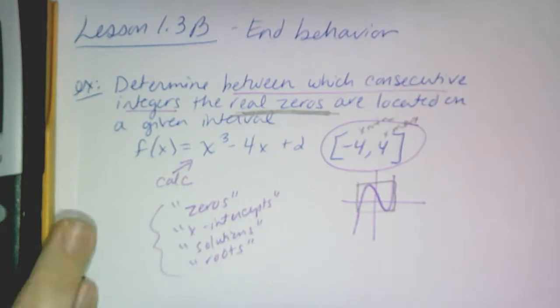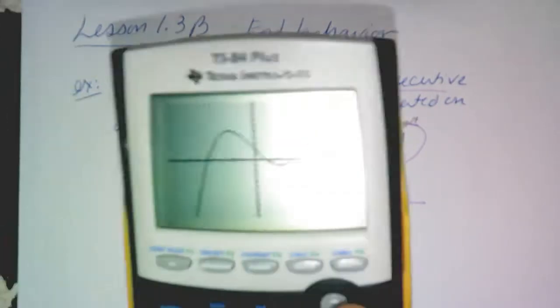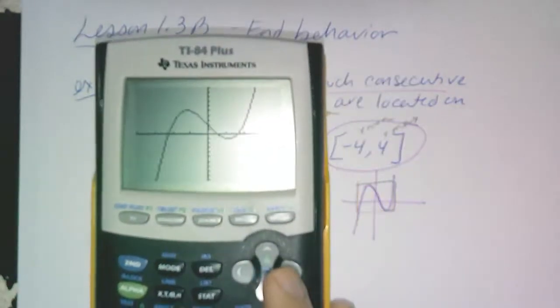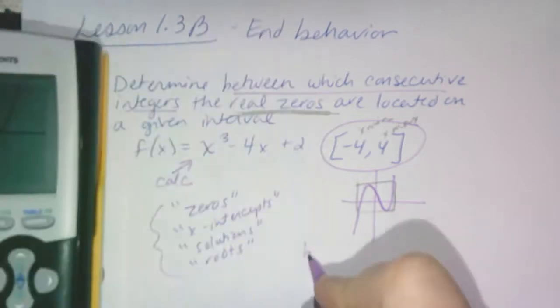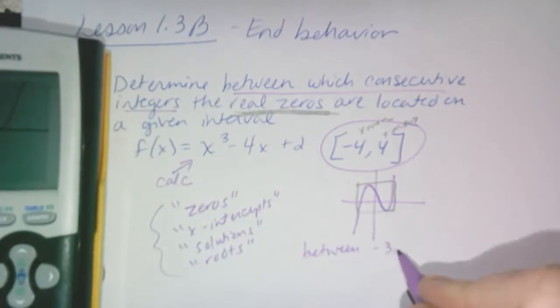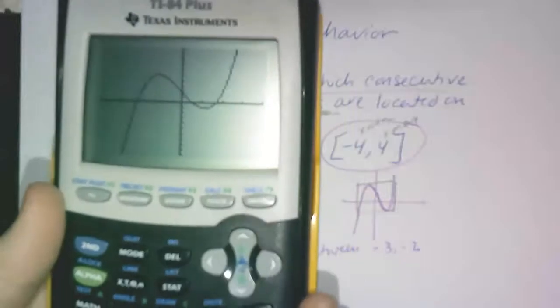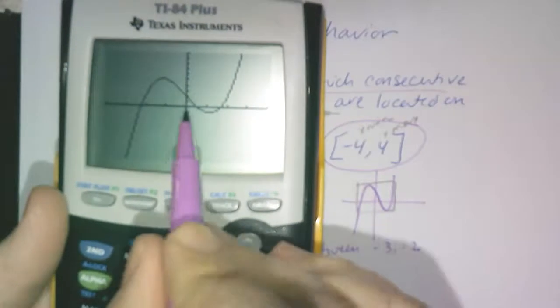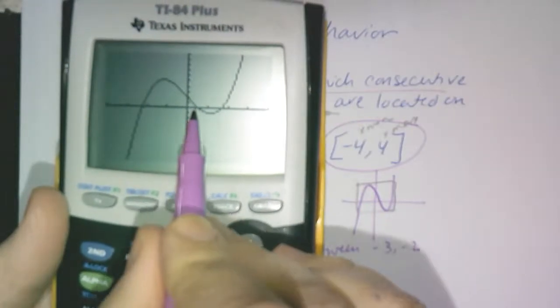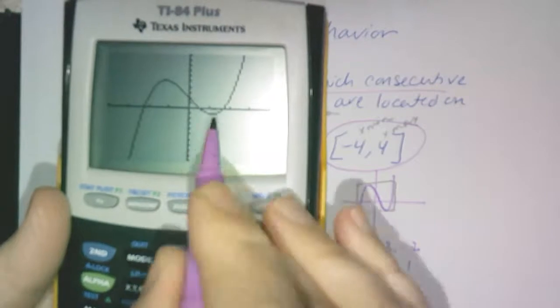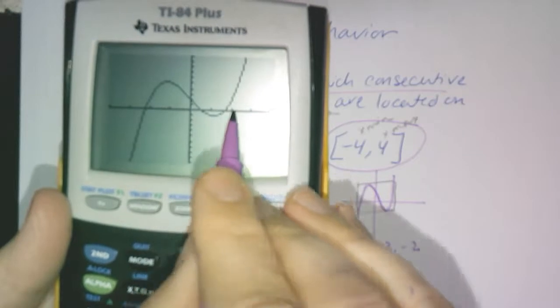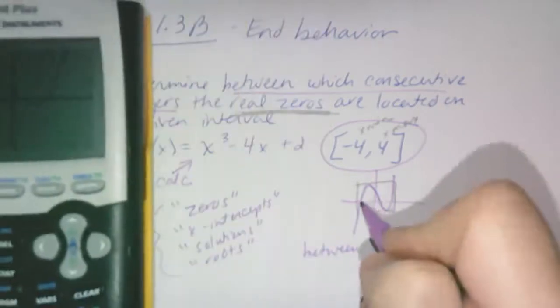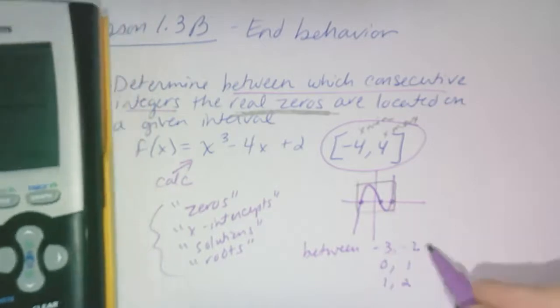So the question again is, between which consecutive integers are the real zeros? And I've talked about this previously. When you see zeros, get it in your head, that means x-intercepts. That also can mean solutions. It can also mean roots, but in this case, real roots. They're real roots. There are imaginary roots. But these all could be the same thing, essentially. So where is my first root located at? Between what two integers?